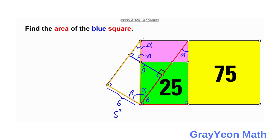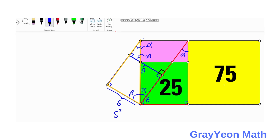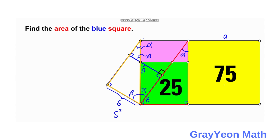Let us disregard the areas for now and label the sides of the two squares. Let the side of the yellow square be A and the side of the green square be B. A segment becomes A minus B. The side of the green square is also B. For the orange triangle, the hypotenuse is the same as the side of the yellow square, which is A, and the shorter length is S.